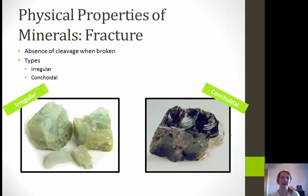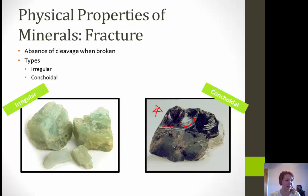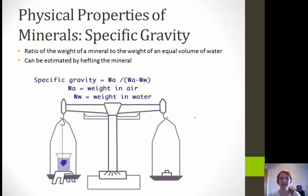Next is fracture, which is the absence of cleavage when broken. We have two types: irregular, which just breaks into all kinds of different pieces, and conchoidal, where you can see these rounded, smooth surfaces. Next is specific gravity — the ratio of weight of a mineral to the weight of an equal volume of water. This can be estimated by the hefting of a mineral, though we're not going to worry about that too much for this class, but it is a good way to identify minerals.